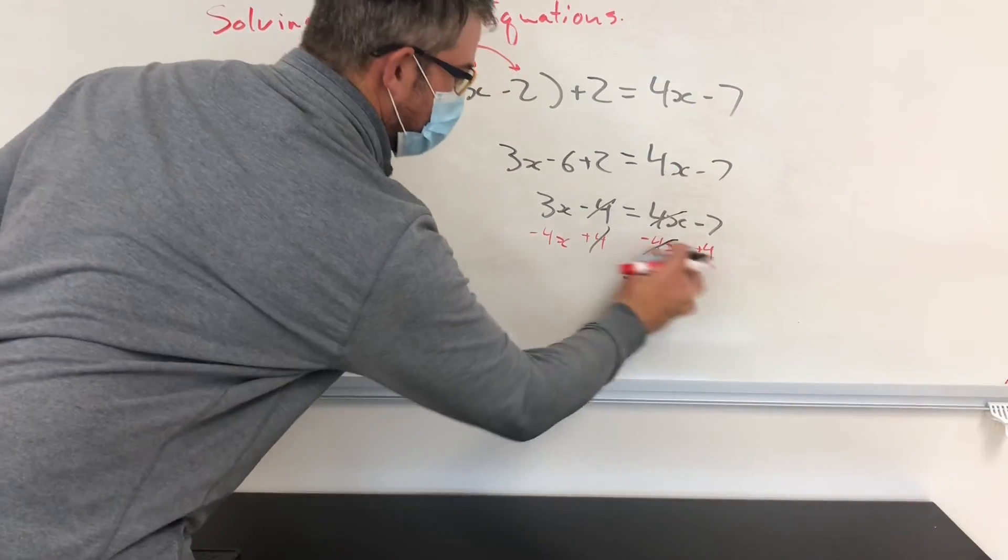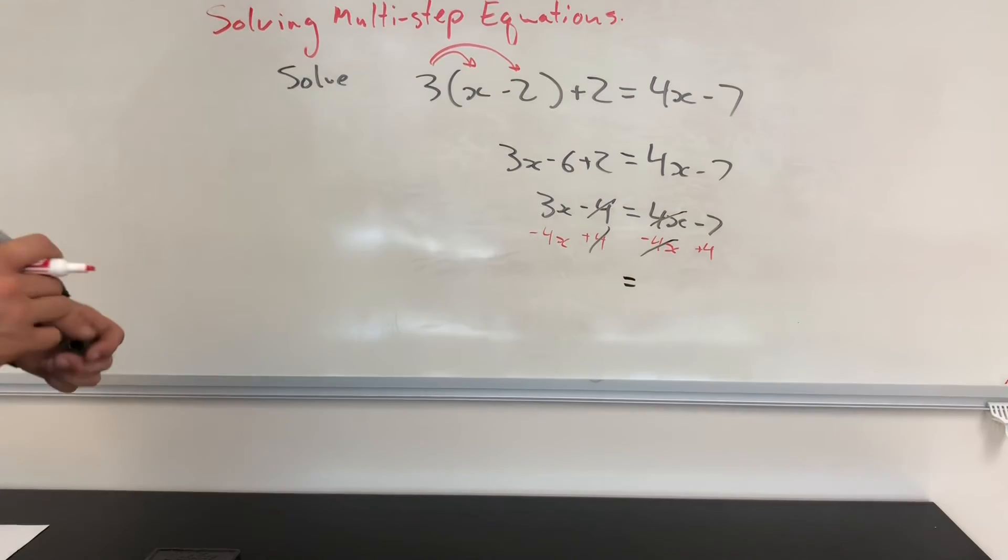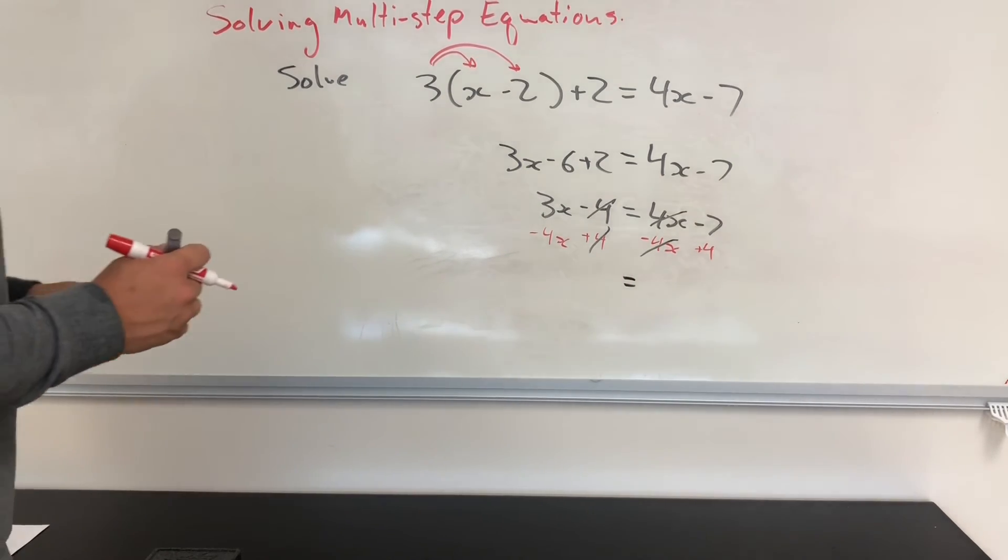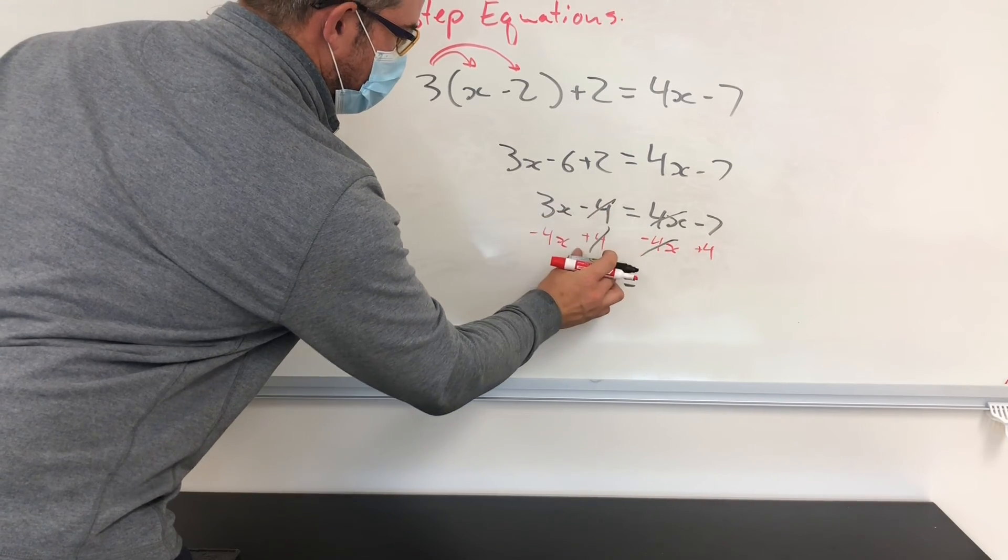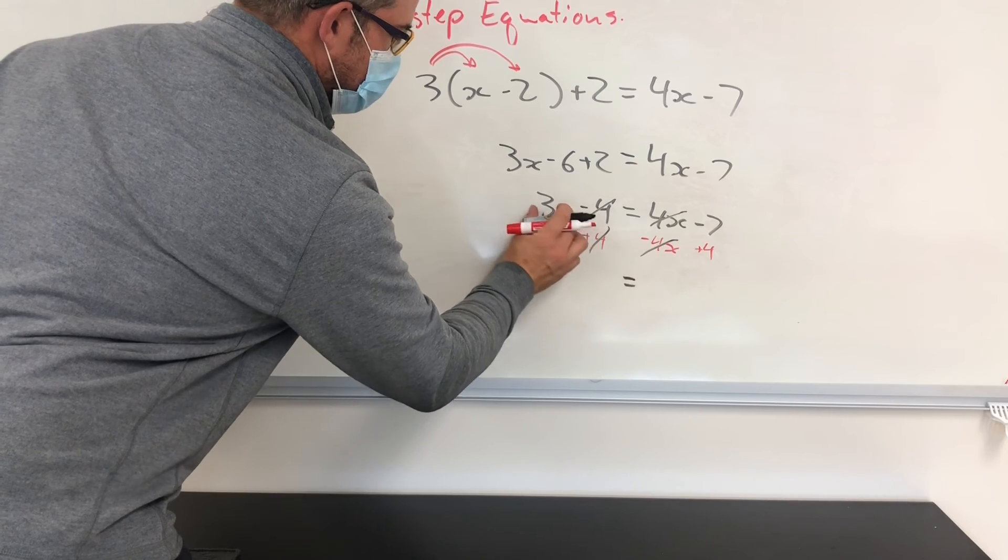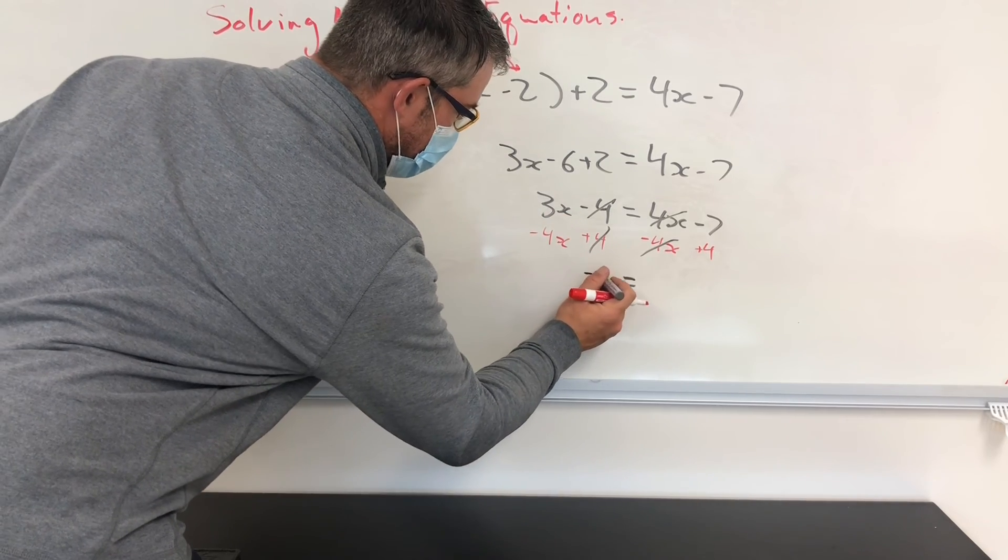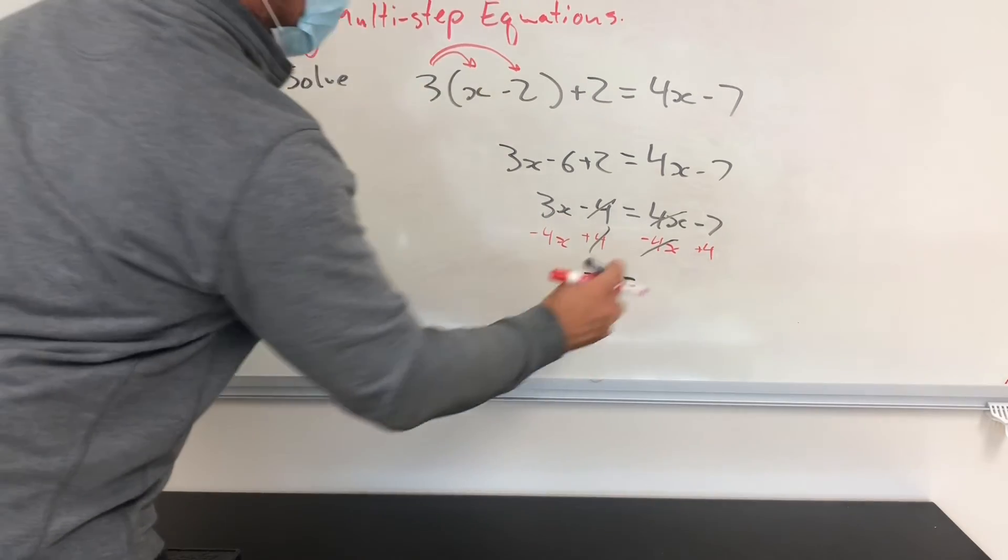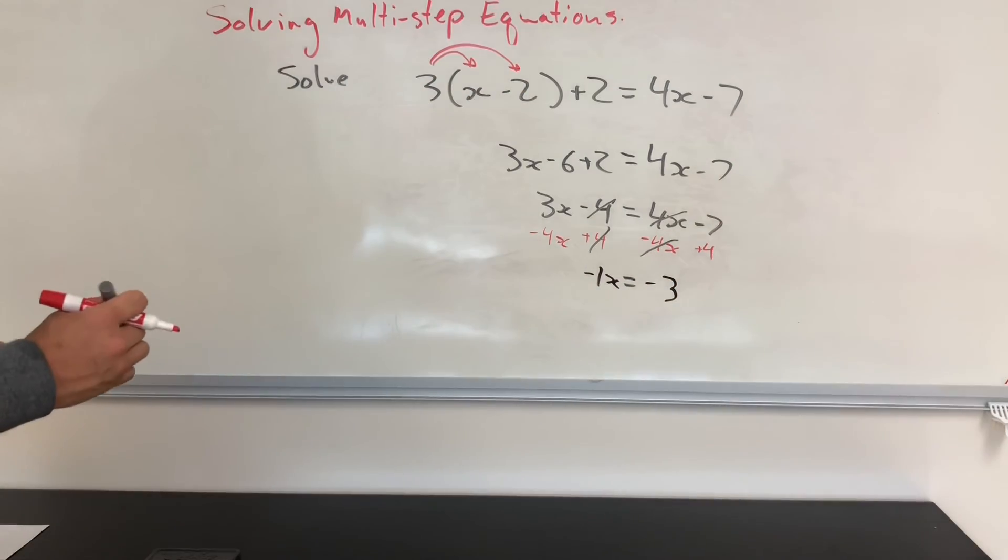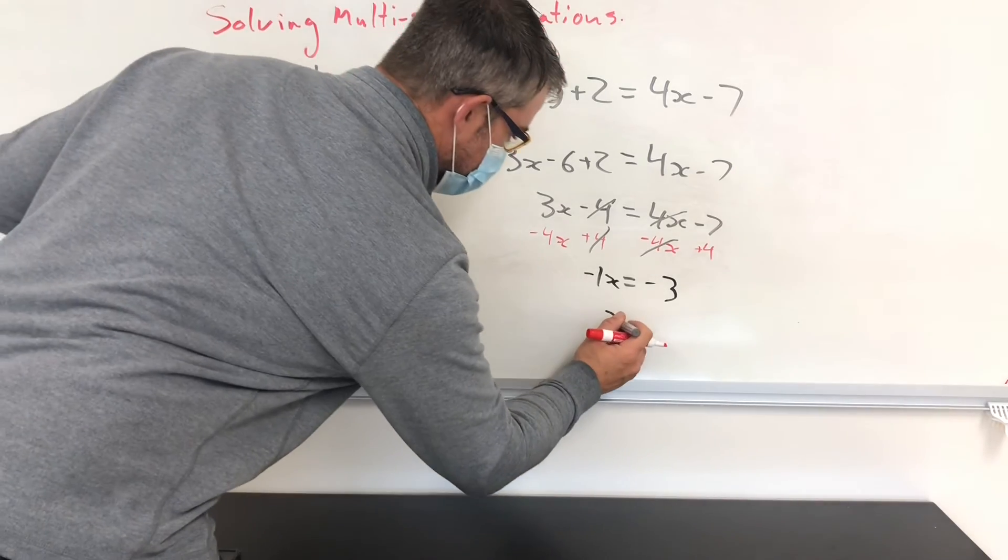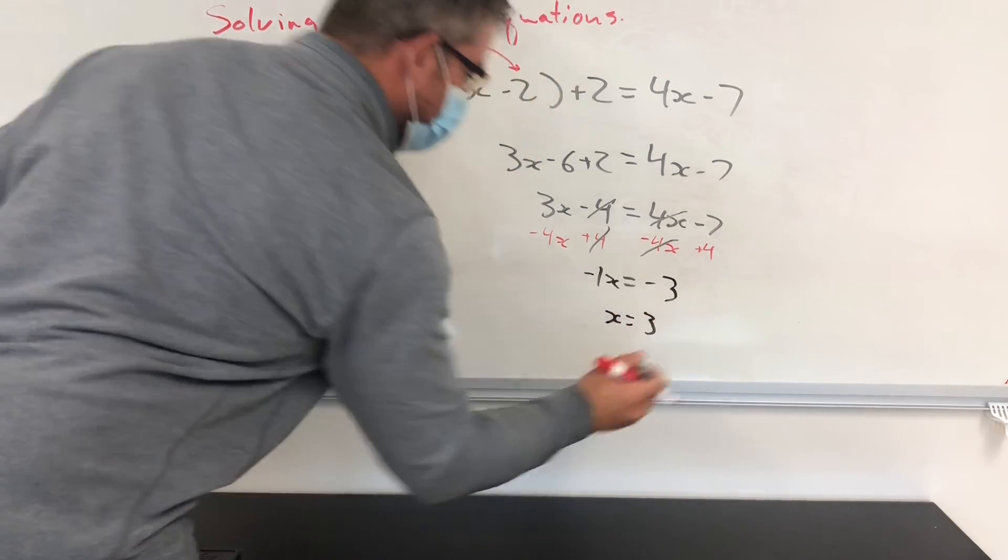Now I've shown my rough work in red underneath. You should be showing some rough work. There's multiple different ways of showing it. Now we'll simplify. 3x minus 4 plus 4, well, the 4's cancel. So 3x minus 4x is just minus 1x. And then negative 7 plus 4 is just negative 3. Well, if negative x equals negative 3, then I suppose that means x equals 3.